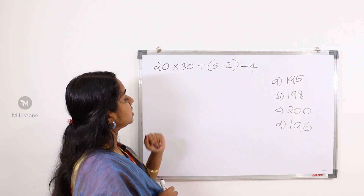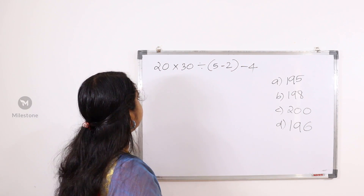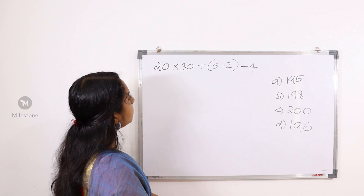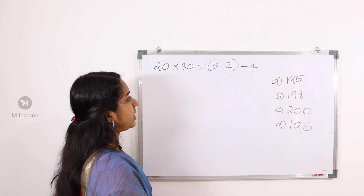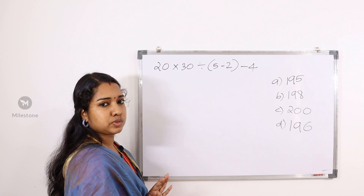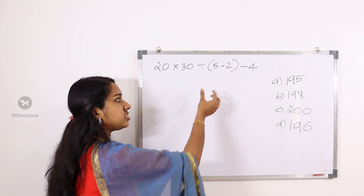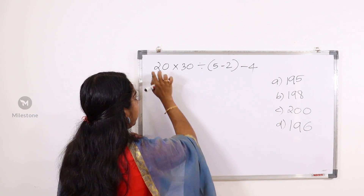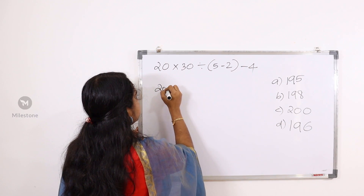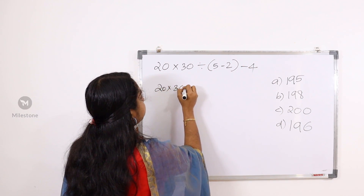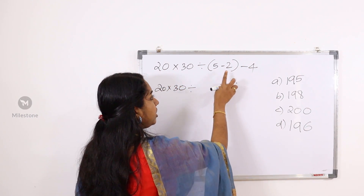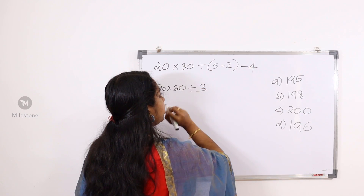The answer is confirmed. 20 minus 30 is in a bracket. 5 minus 2 is a bracket, minus 4. What does it do? Open the brackets. If you want to open it: 20 minus 30 in bracket, and 5 minus 2 is 3.